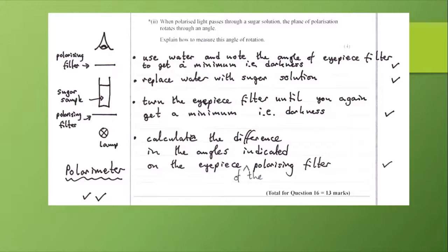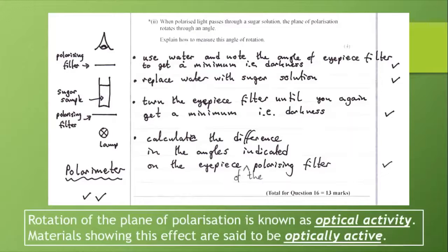The angle of rotation of a sugar solution depends on the strength of the sugar solution. So we might be doing an experiment where we have different strengths of sugar solution and we relate the rotation of the angle of polarization to the strength of the sugar solution. I've indicated at the bottom that rotation of the plane of polarization is known as optical activity, and materials showing this effect are said to be optically active.